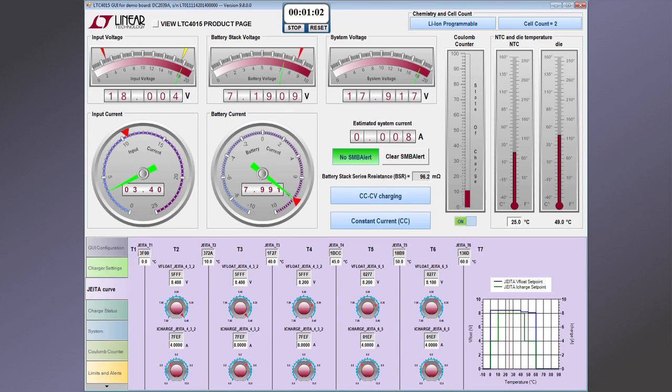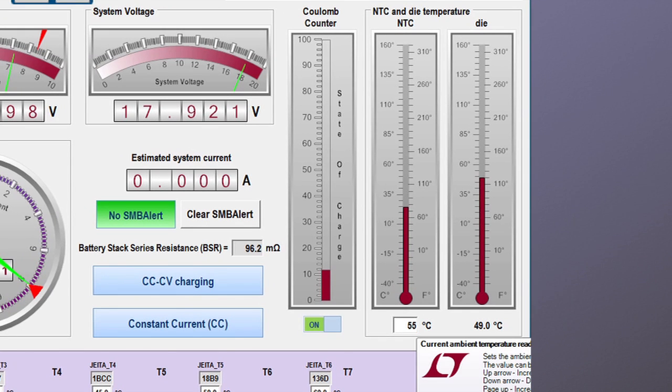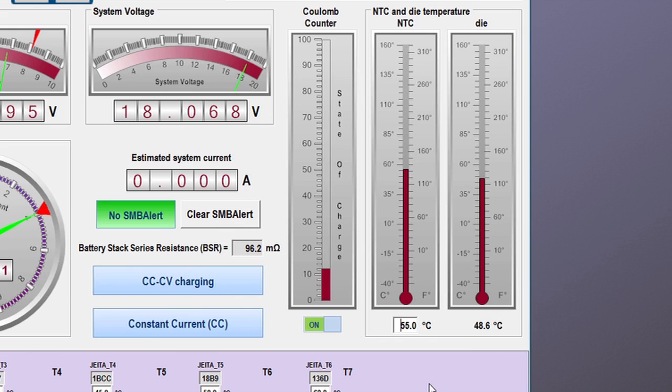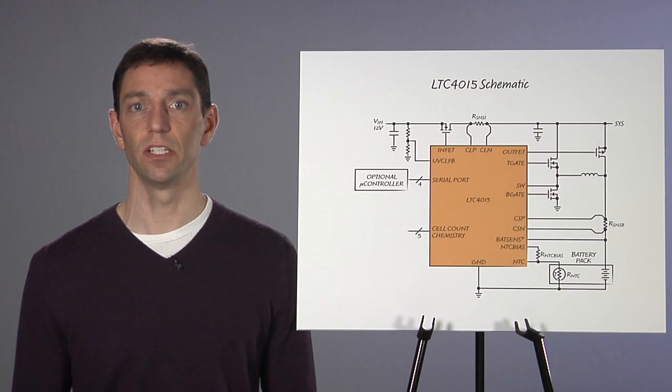The JEITA curve page allows the user to adjust the temperature set points as well as the charge current and charge voltage in each temperature range. The DC2039A demo board includes a digitally controlled resistor to simulate ambient temperature changes. Next to the simulated NTC temperature is a readout of the LTC4015 die temperature as measured by its on-chip temperature system. The GUI highlights many of the LTC4015 features and gives you a good idea of everything that can be measured and monitored.